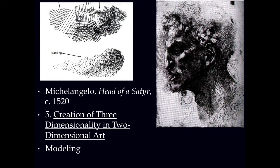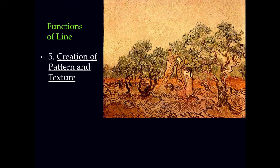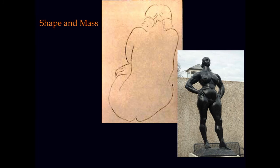So, line creating modeling or chiaroscuro. Another function of line is to create pattern and texture — the small mark-making of Van Gogh, little small lines. Now we're on to the difference between shape and mass.